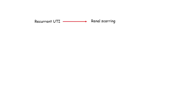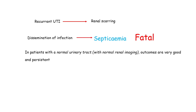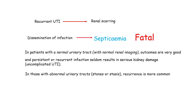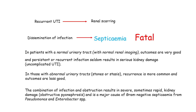Renal scarring can result from recurrent UTI, and dissemination of infection as septicemia can be fatal. In patients with a normal urinary tract, outcomes are very good and persistent or recurrent infection seldom results in serious kidney damage. In those with abnormal urinary tracts, recurrence is more common and outcomes are less good. The combination of infection and obstruction results in severe, sometimes rapid kidney damage, and is a major cause of gram-negative septicemia from Pseudomonas and Enterobacter species.